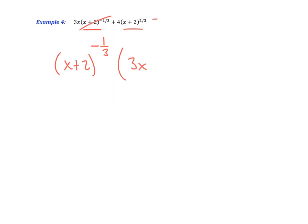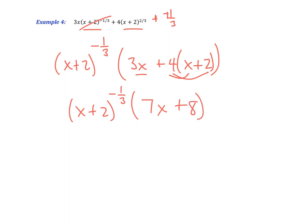I am taking away a negative 1 third, which means that I'm actually adding a 1 third. Which means that I really am left with a plus 4 parentheses x plus 2 to the 3 thirds or 1 power. Which means I have x plus 2 to the negative 1 third. And if I combine like terms, I've got 4x and 3x becoming 7x. And then, 4 times 2 is 8. And that's my final answer.